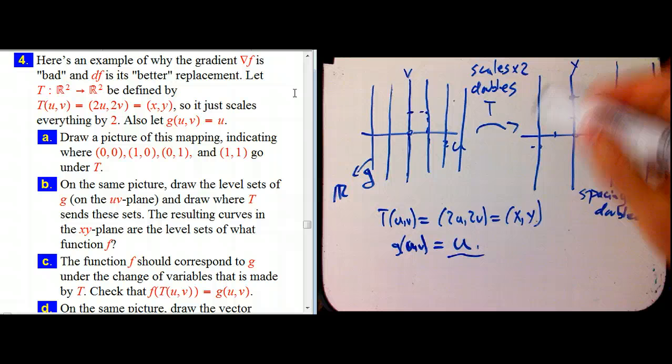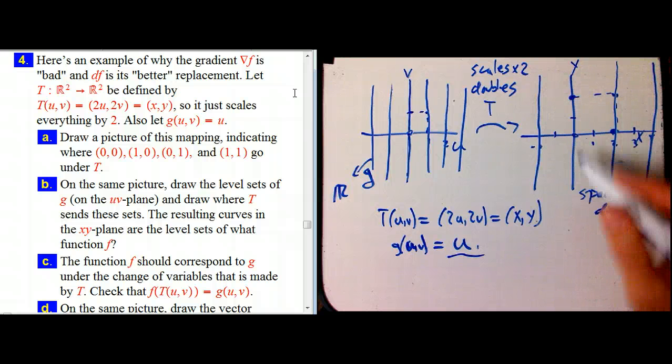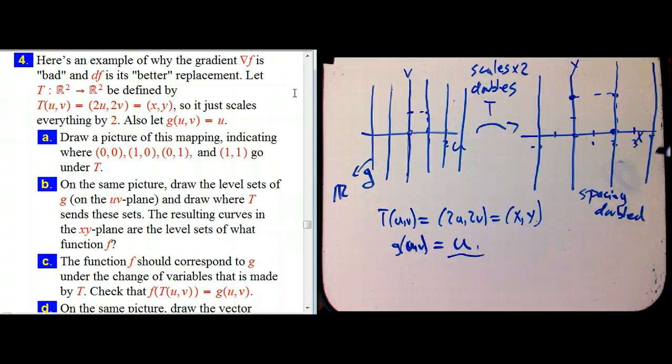And oh, is this the level sets of some function f? Let's see. These certainly look like level sets. They're a non-intersecting family of curves.